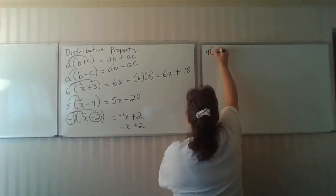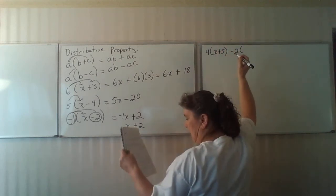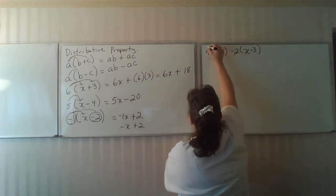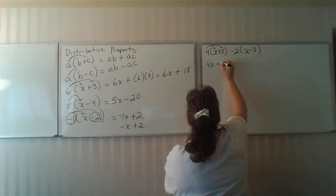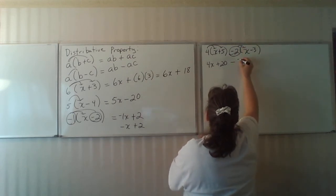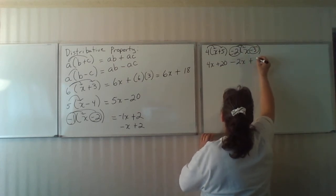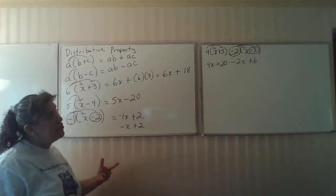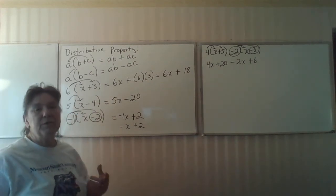I have 4 times X plus 5 minus 2 times X minus 3. 4 times X is 4X, 4 times 5 is plus 20. Negative 2 times X is minus 2X, and negative 2 times that negative 3 is plus 6. You see how important it is to understand multiplication of integers and not to drop your negative signs.